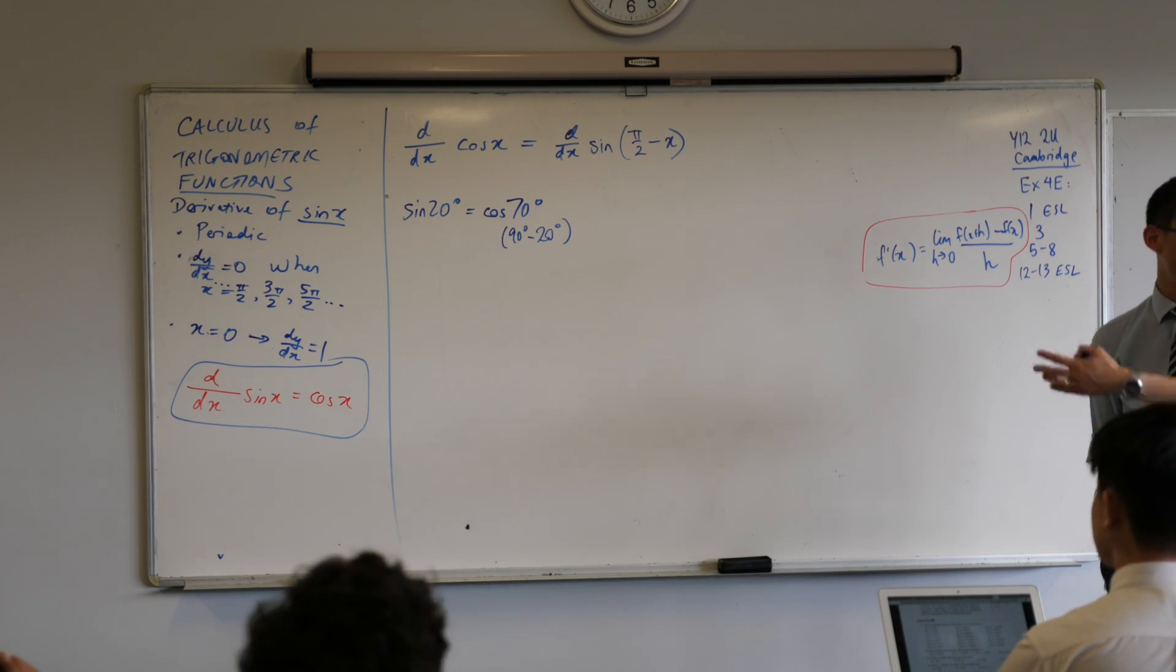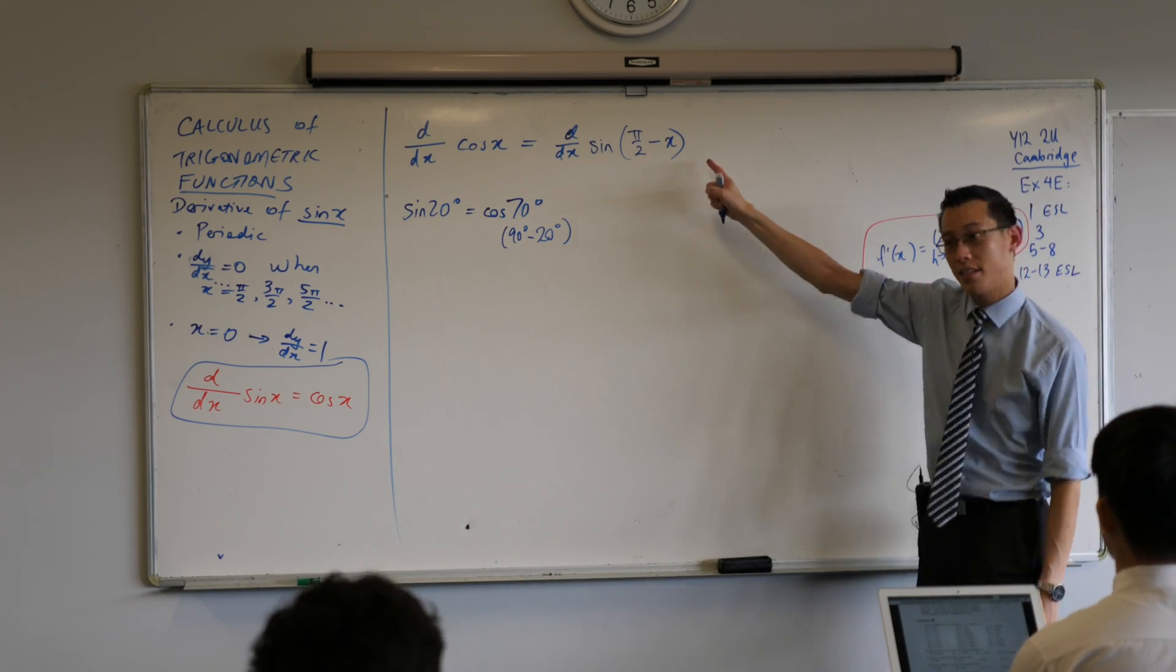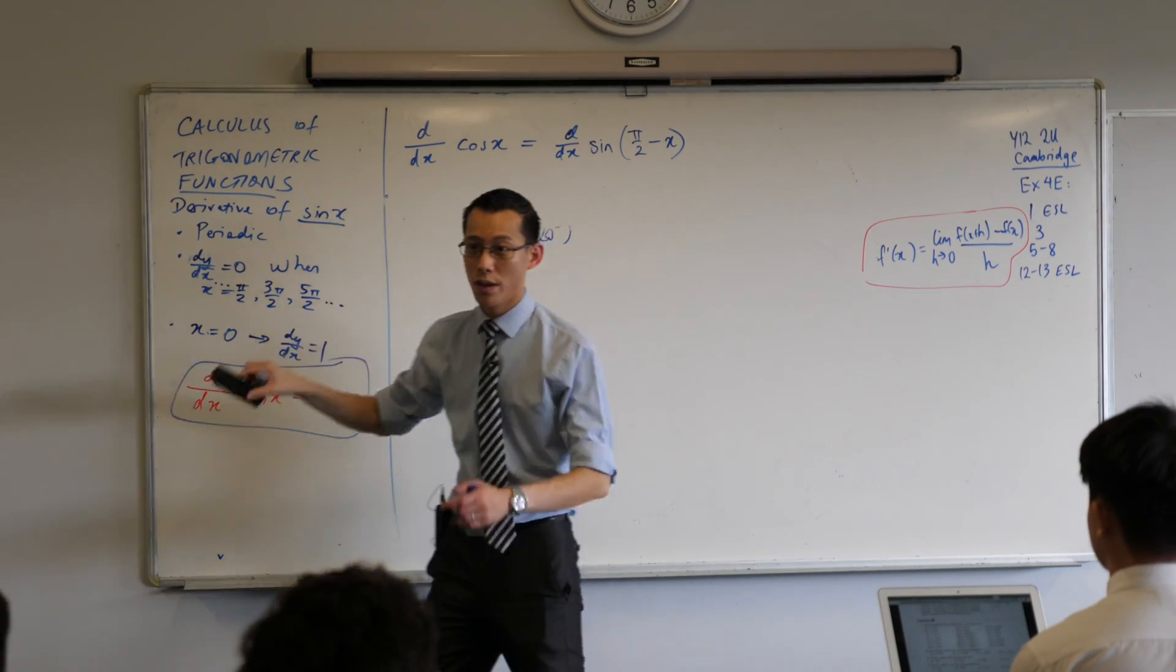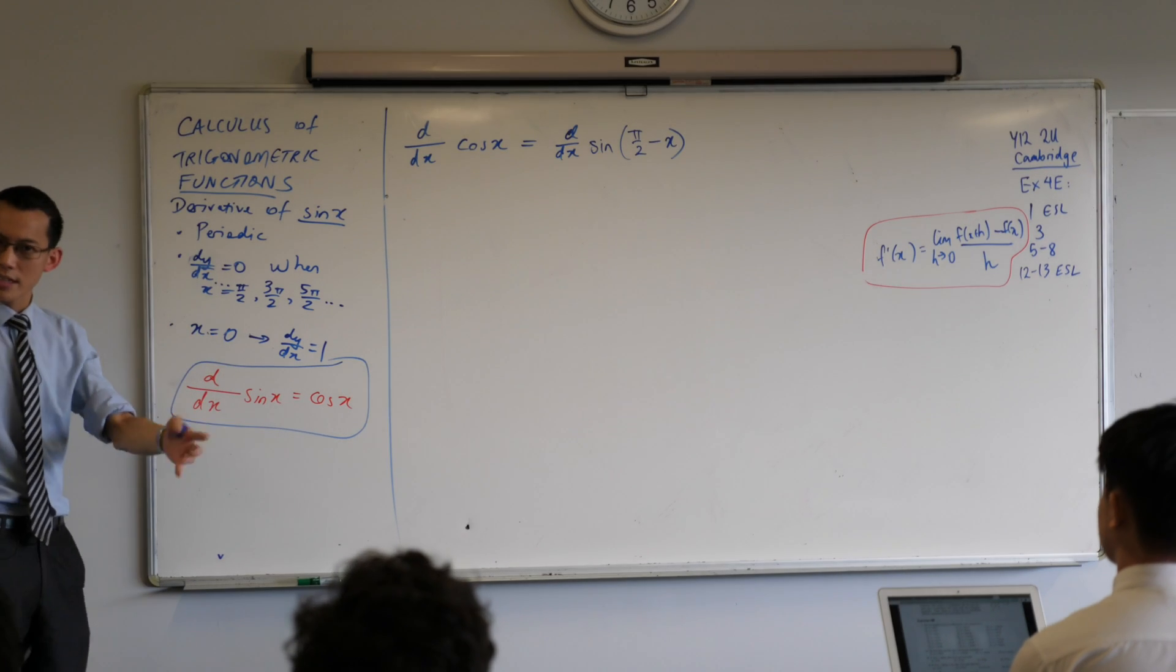We used chain rule, right? Because you're like, I don't want to raise this to the power of 7 and expand. And this is exactly the situation we have here. I can use chain rule to make an estimate of this. There's an outside function, and there's an inside function.